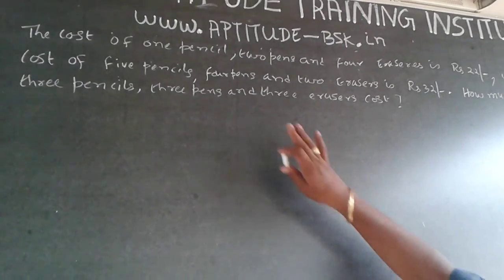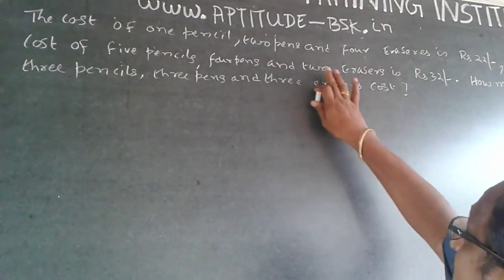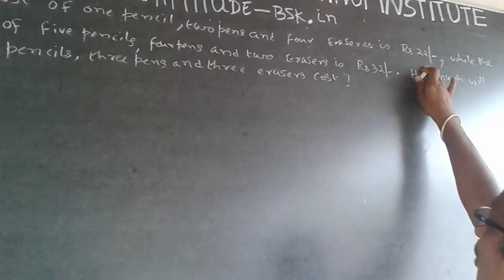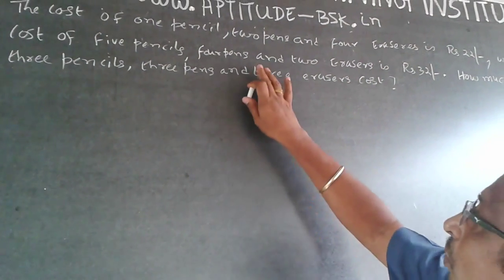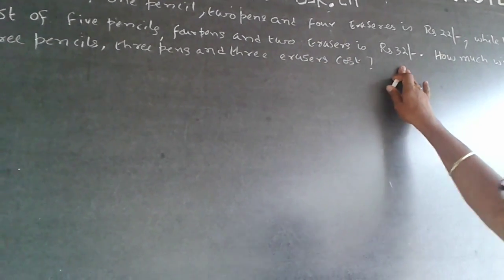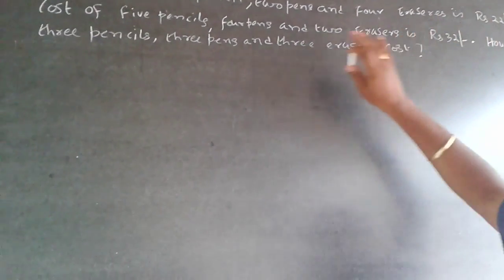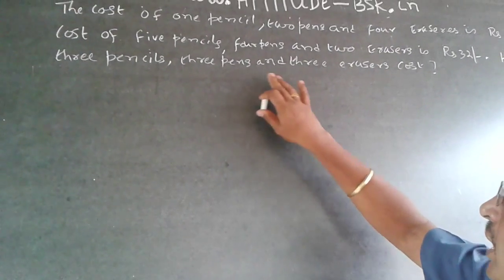The question is: the cost of one pencil, two pens, and four erasers is rupees 22, while the cost of five pencils, four pens, and two erasers is 32. How much will three pencils, three pens, and three erasers cost?